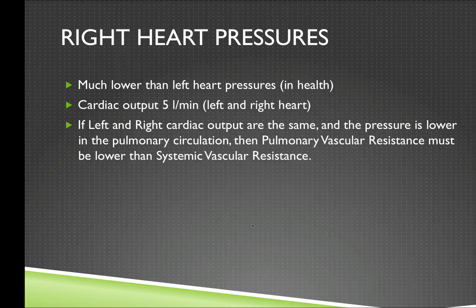In general, right heart pressures in health are much lower than left heart pressures. If we accept that cardiac output in a healthy 70 kg male is five liters per minute, the cardiac output in both the left and right heart will be the same. Given that pressures are lower in the right heart, this implies that pulmonary vascular resistance must be an order of magnitude lower than systemic vascular resistance.